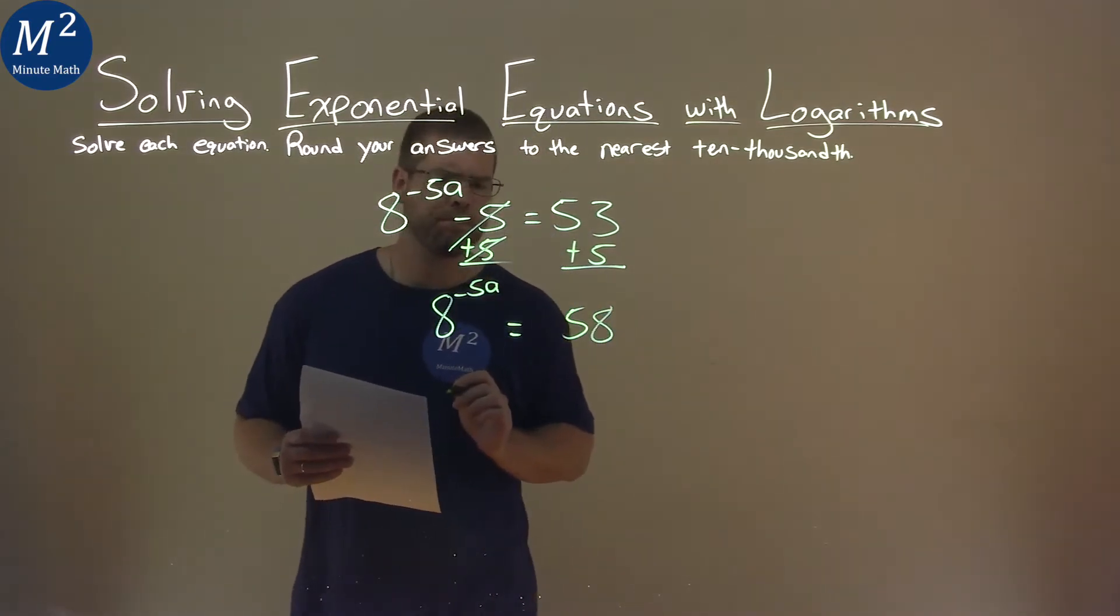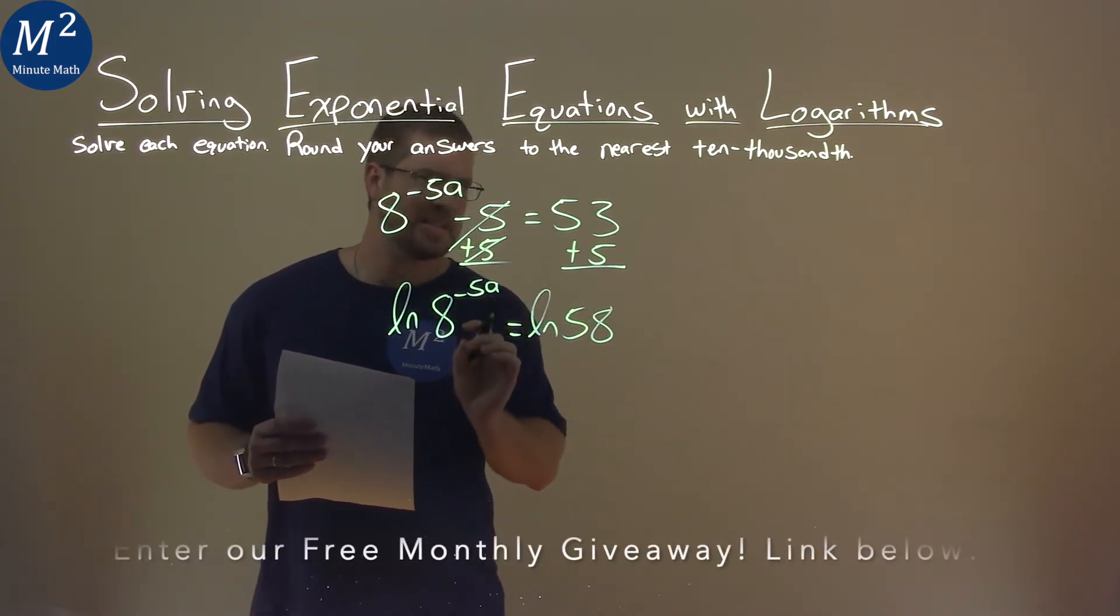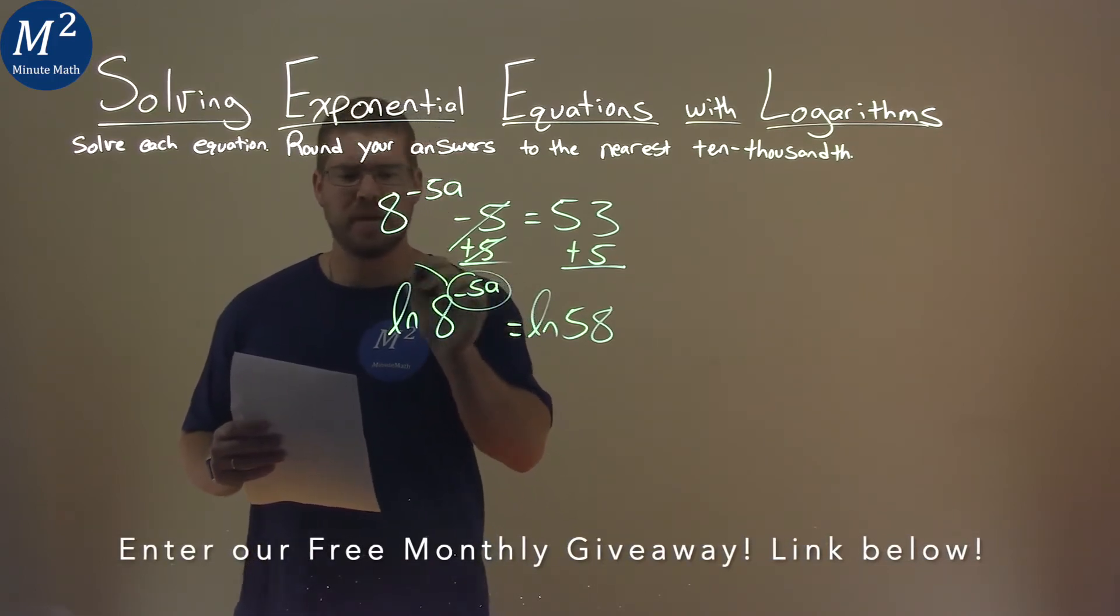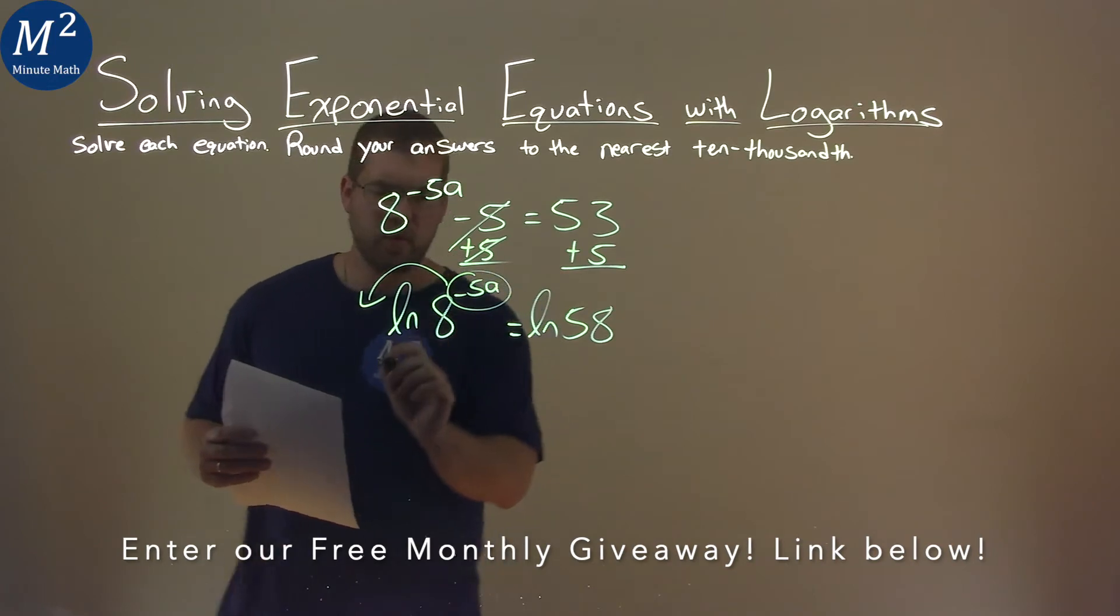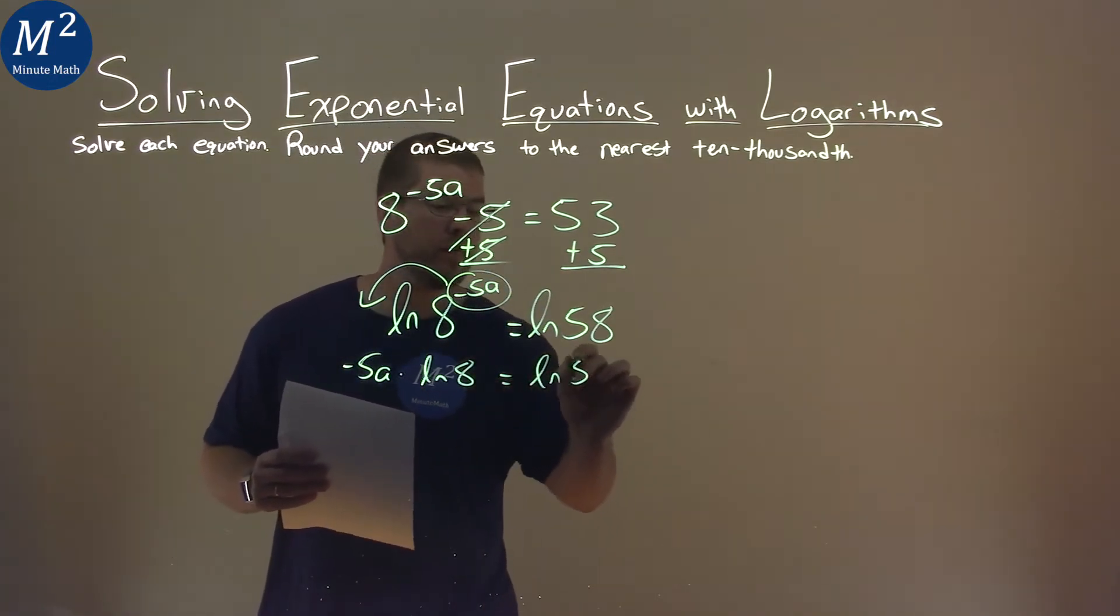Okay, we can take the natural log of both sides of the equation, and what that does, it allows us to take this exponent of negative 5a and bring it out front. So we have negative 5a times natural log of 8 is equal to natural log of 58.